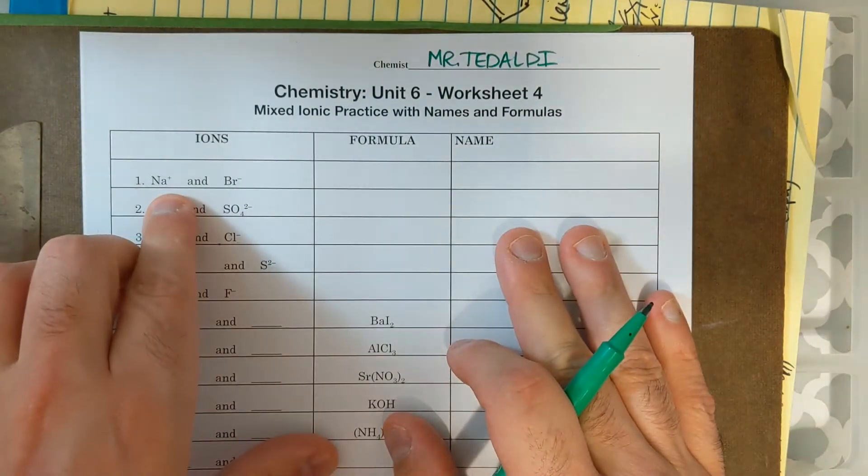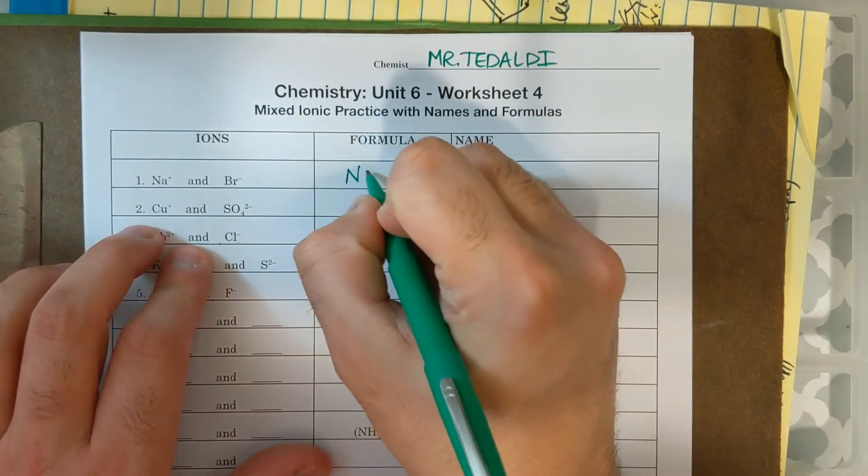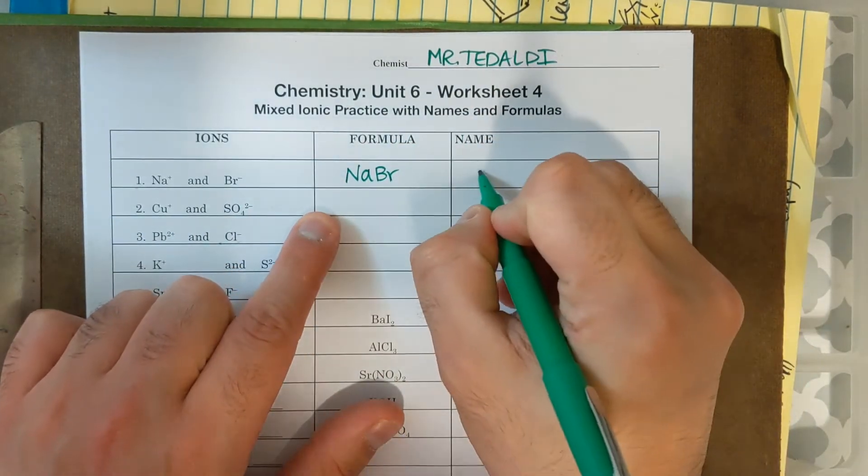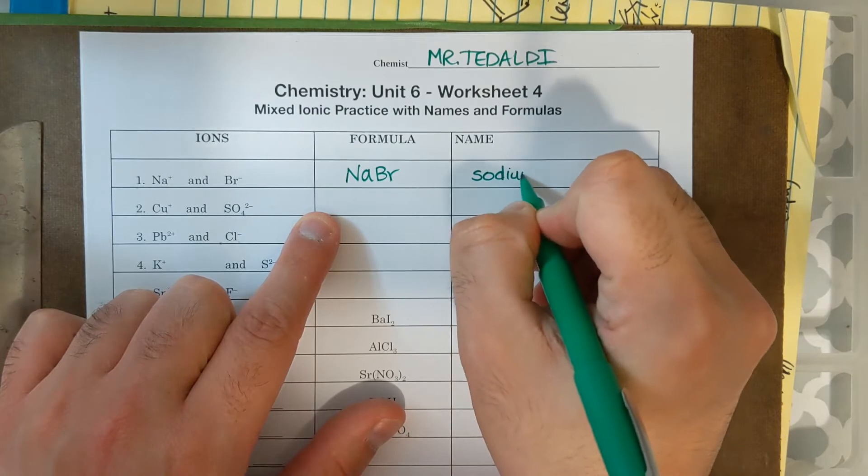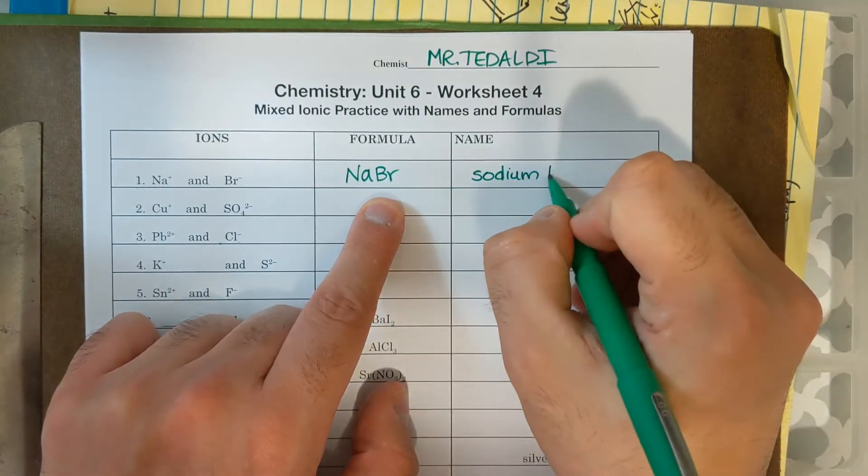Alright, so on the first one, I have Na plus and Br minus. If I do the crisscross method, I'm going to need one of each. And this is not a transition metal. This is going to be named Sodium, and then Br, the ending of it is Bromine, it's going to be Bromide.